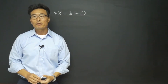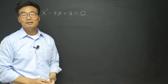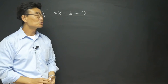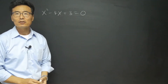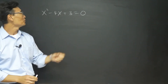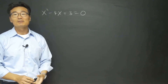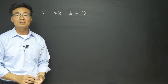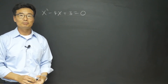This is chapter 3, section 5, and I'd like to go ahead and show you another method of solving for the variable x when given a quadratic equation. It's called completing the square.